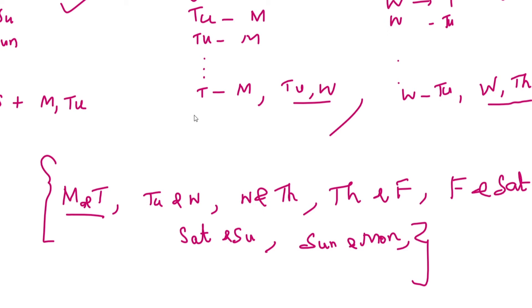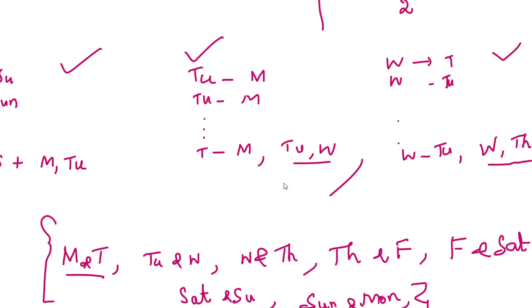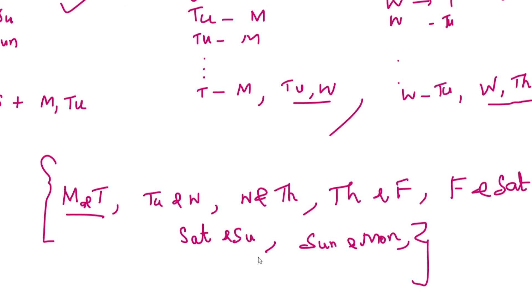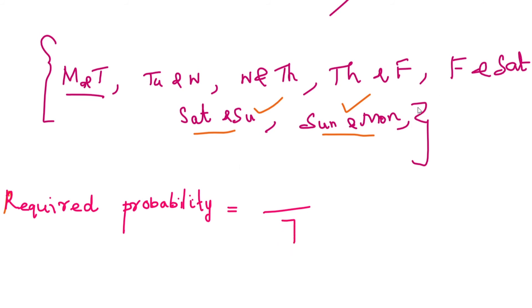Already we have 52 Sundays. We need one more Sunday to make 53. Looking at the seven possible day pairs, the favorable outcomes are Saturday and Sunday, or Sunday and Monday — these two pairs contain a Sunday. So out of seven possible outcomes, we have two favorable events. Therefore, the probability for the first part is 2/7.